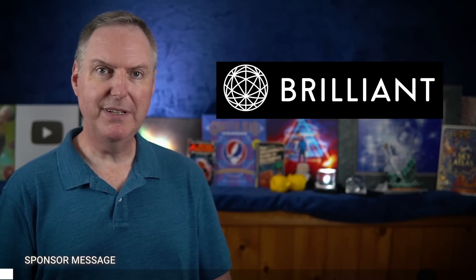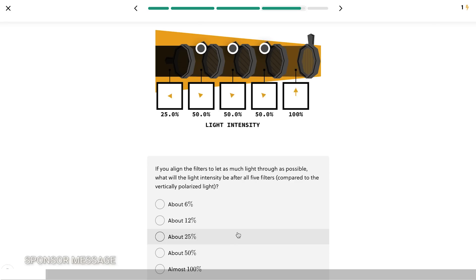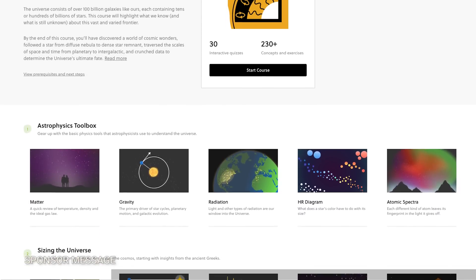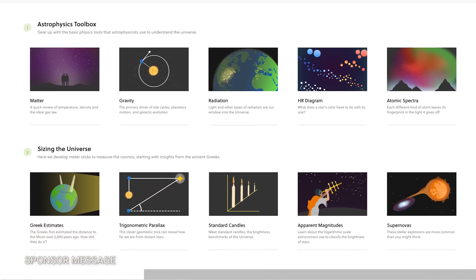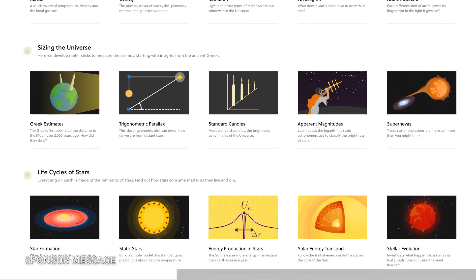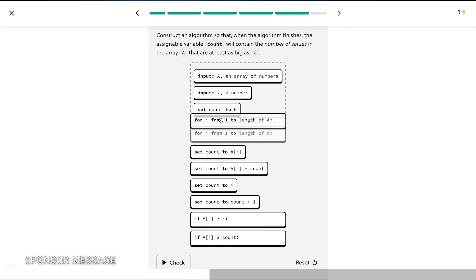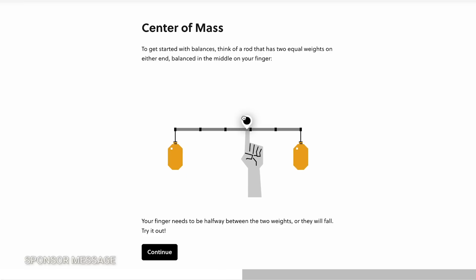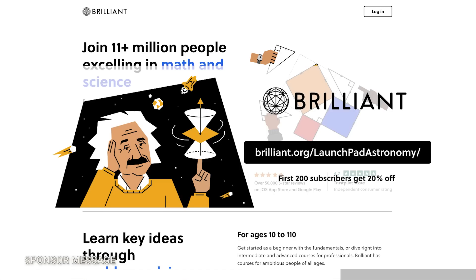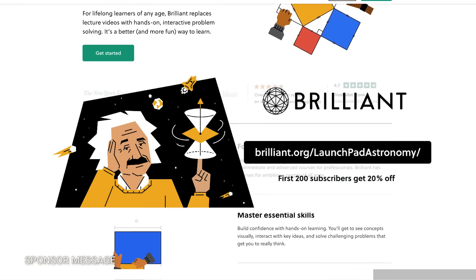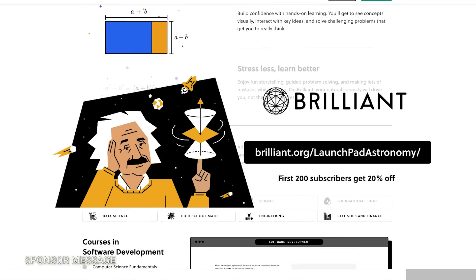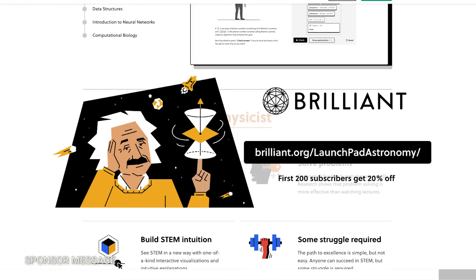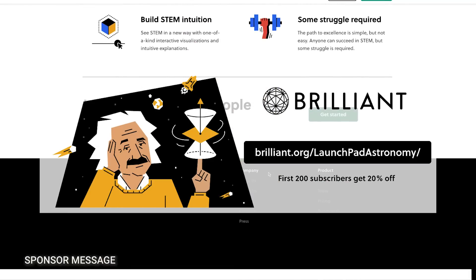You can take an entire course just on astrophysics and learn everything from a star's life cycle to the fate of the universe. Interactive learning is a great way to not just play around with ideas, but to really understand them at a deeper level. And best of all, Brilliant allows you to learn at your own pace. So you can do a lot of work in one day or do a little bit here and there, even if it's on the go or in between breaks at work. To get started for free, visit brilliant.org slash launchpad astronomy or click on the link in the description. The first 200 visitors to this link will get 20% off Brilliant's annual premium subscription.